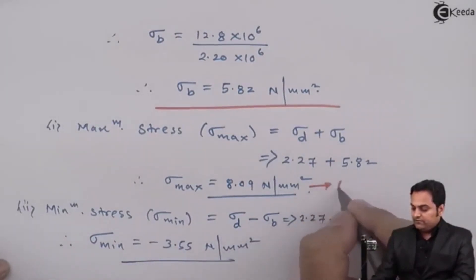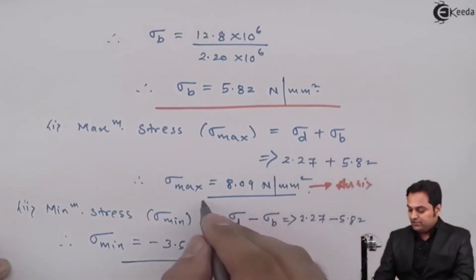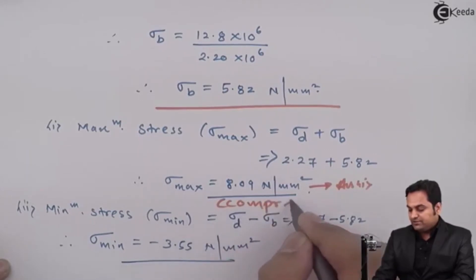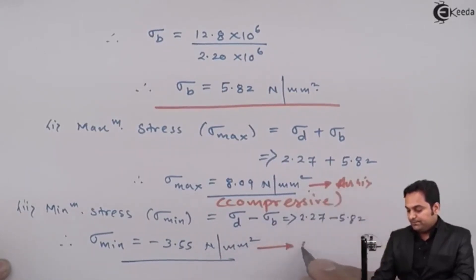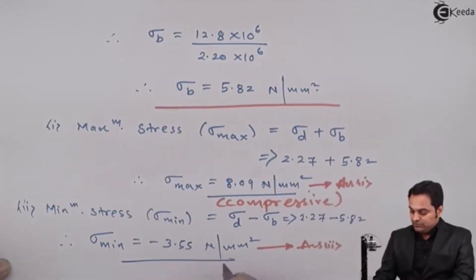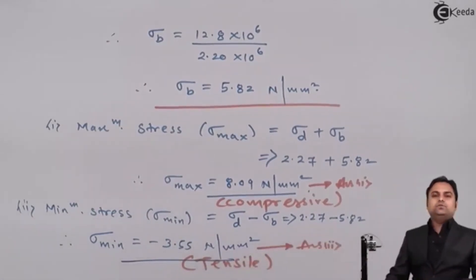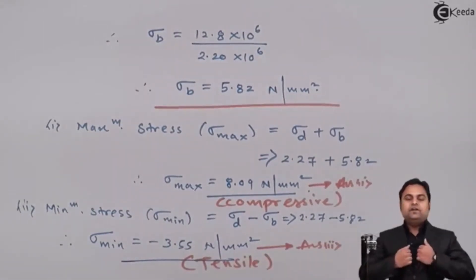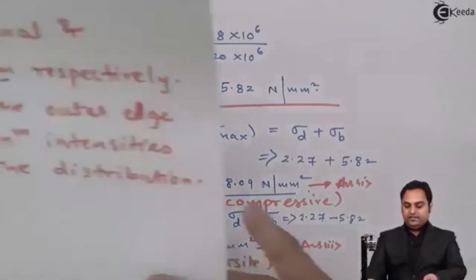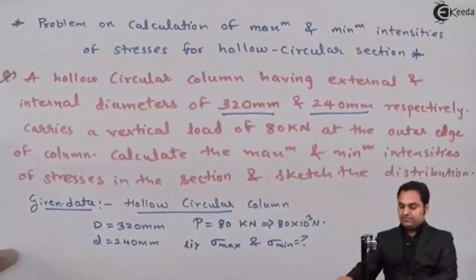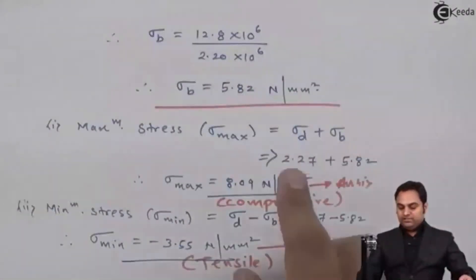Since sigma max is positive it is compressive in nature, and since sigma min is negative it is tensile in nature. This is the only chapter where compressive stress is taken as positive and tensile as negative. We have now found both required values, sigma max and sigma min.